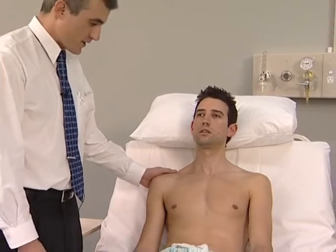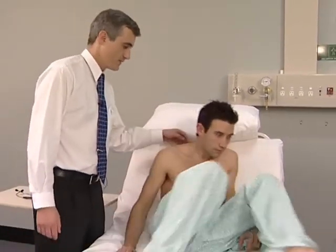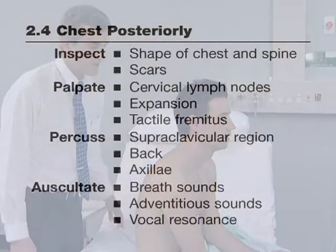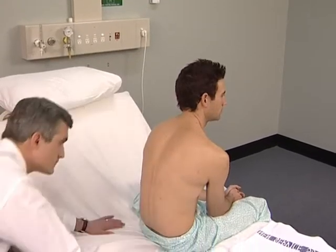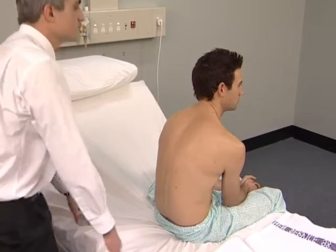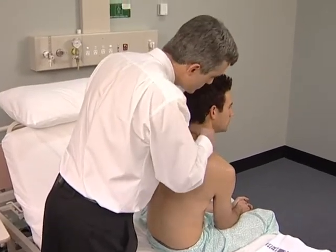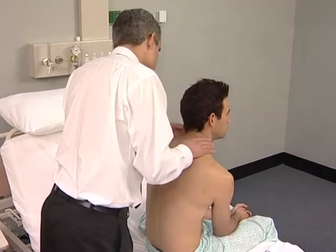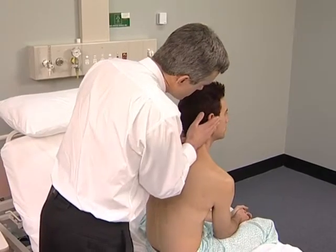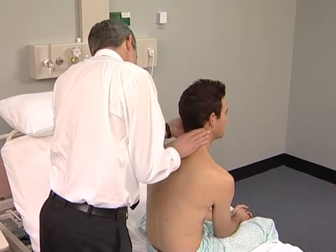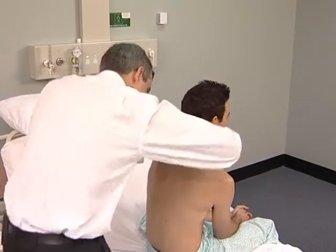Most clinicians examine the back of the chest next, as there are likely to be more signs of lung disease there. Sit the patient over the edge of the bed. Look at the shape of the chest and spine, and look for thoracotomy scars that may indicate previous lung surgery. The cervical lymph nodes are best examined from behind the patient. Some people find it easier to examine the supraclavicular nodes from this position, which is easy if the patient is sitting in a chair.